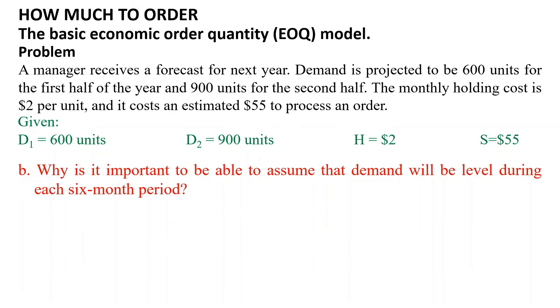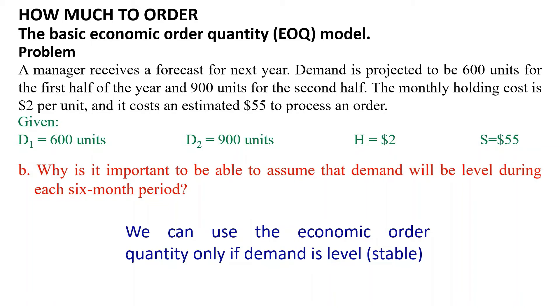The second question is: why is it important to be able to assume that demand will be level during each six-month period? The answer is because we can use the economic order quantity model only if demand is level or stable.